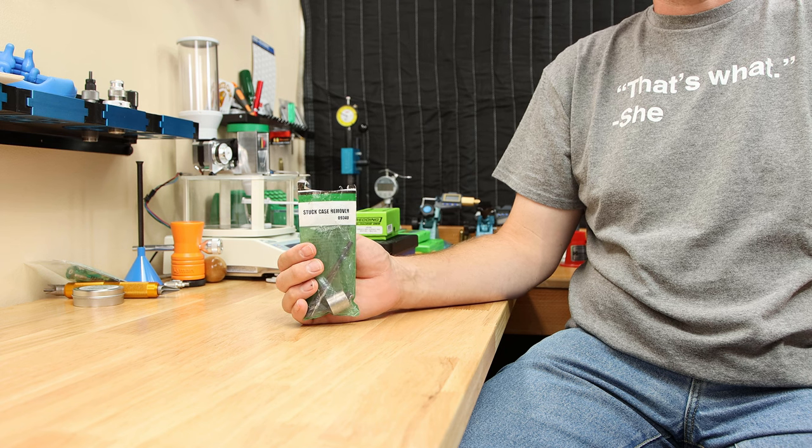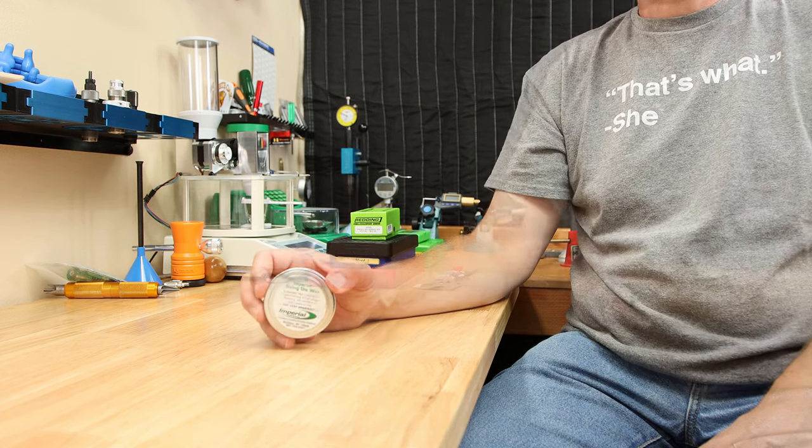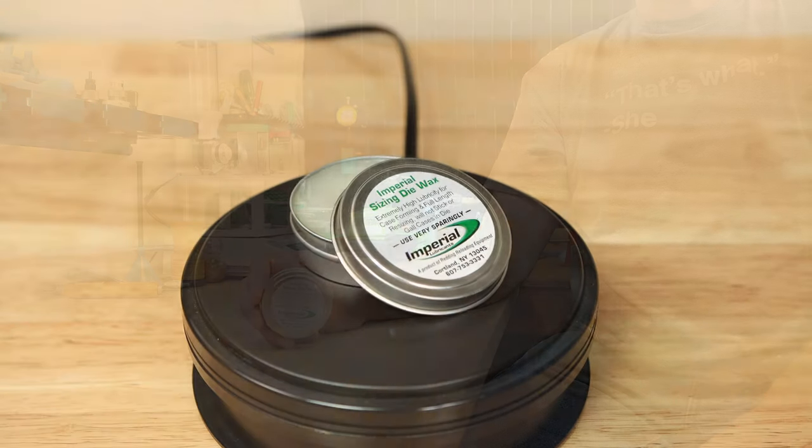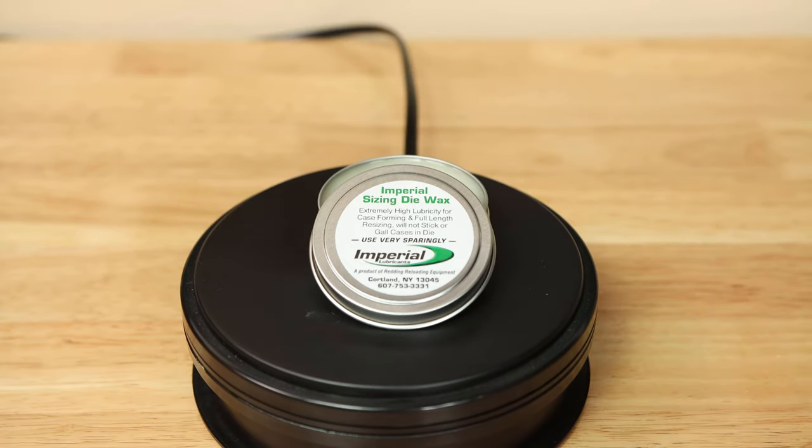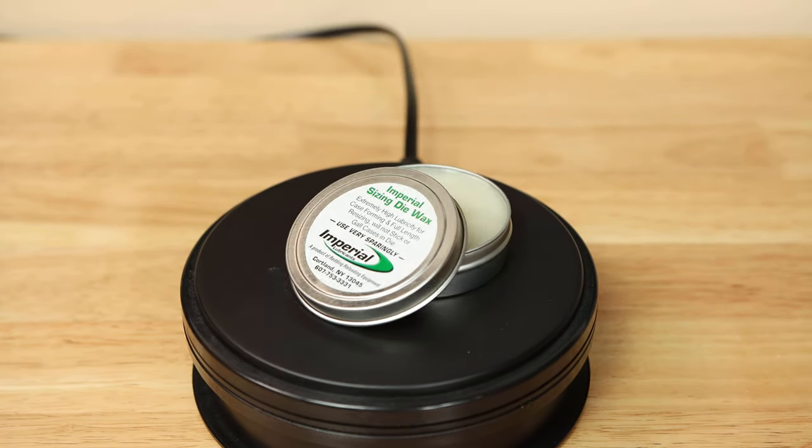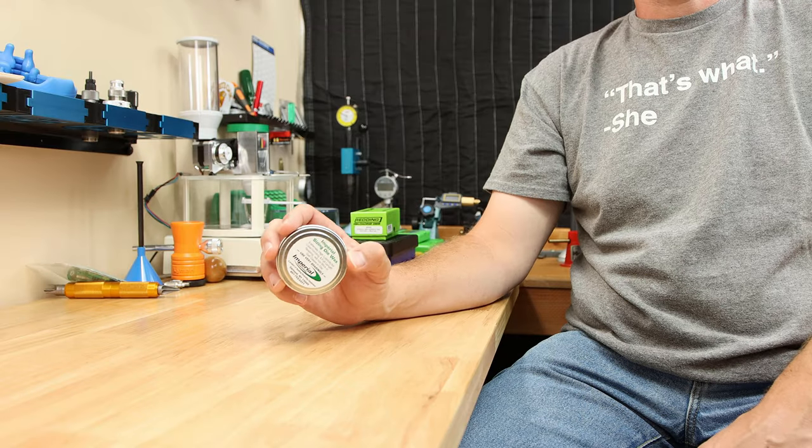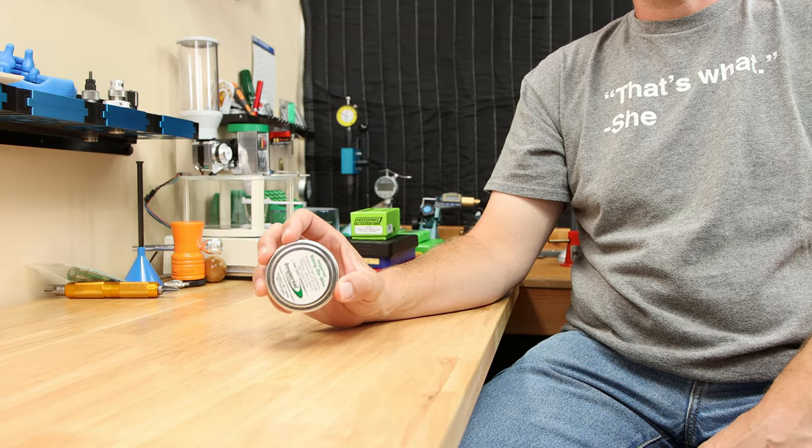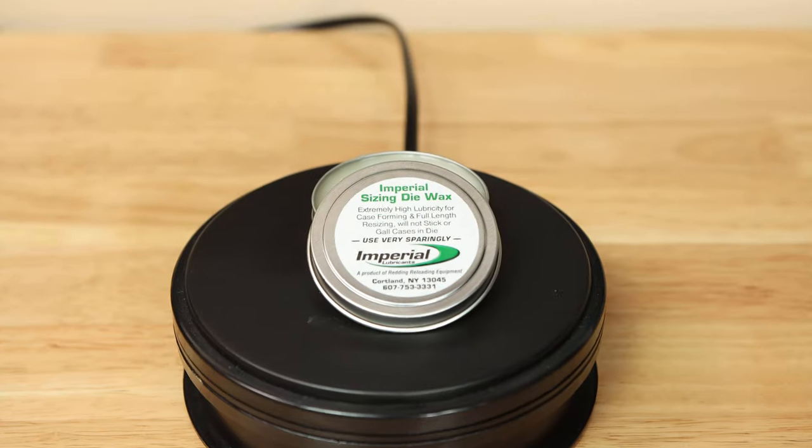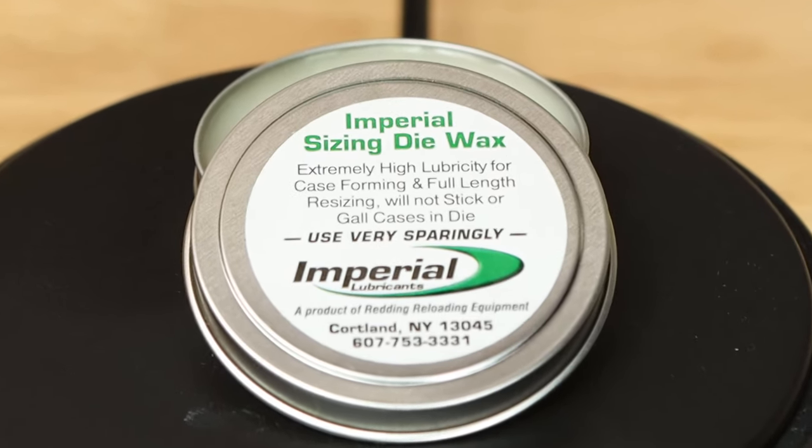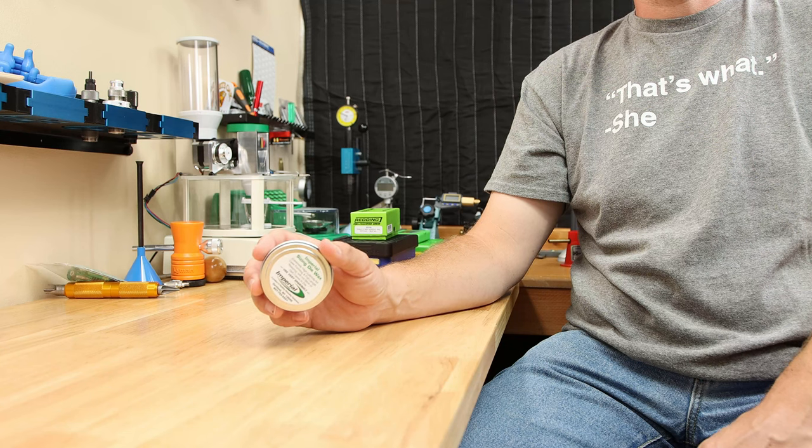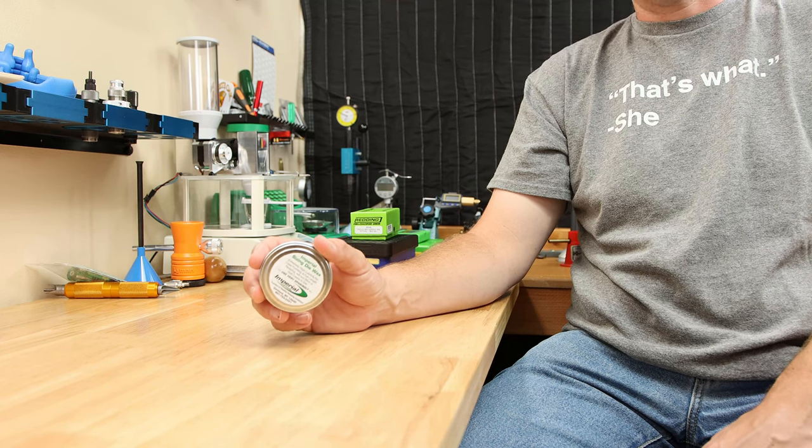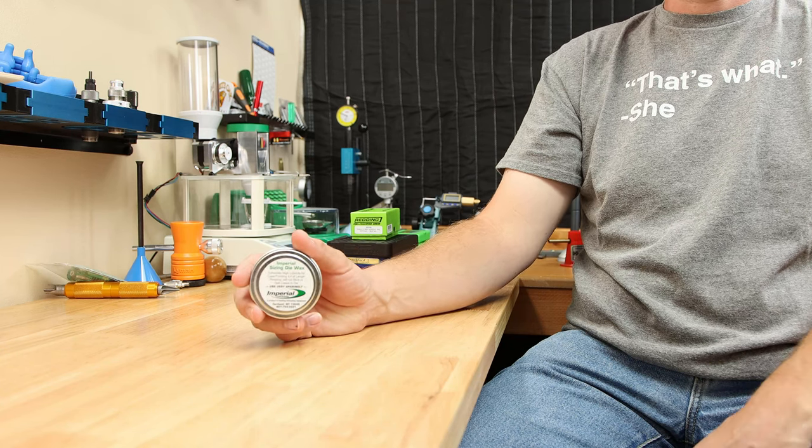Talking about stuck cases, well how do we prevent them? Lube. There's certainly a lot of lubes out there, but this is my gold standard, Imperial Case Sizing Wax. Right now you can get two ounces for around $15. This will go a long way. Like two ounces, probably 5,000 cases or more, if you're using it sparingly, like the directions tell you to. If you're lubing your cases and you're using this, it's very difficult to get a stuck case. But if you've got your own favorite, by all means.